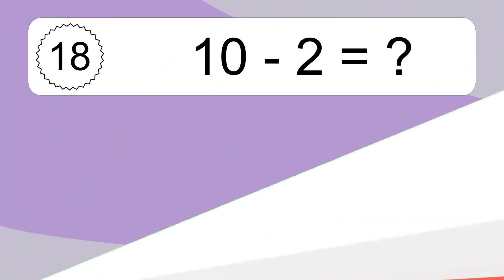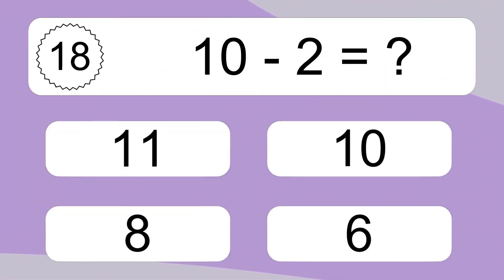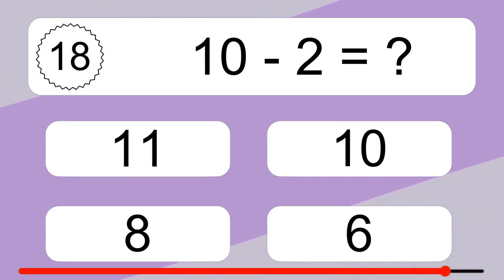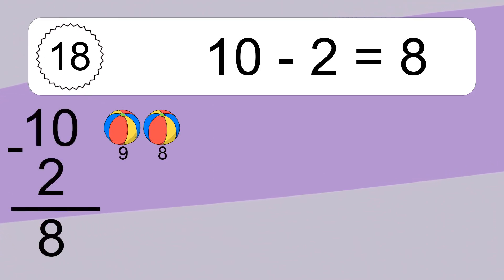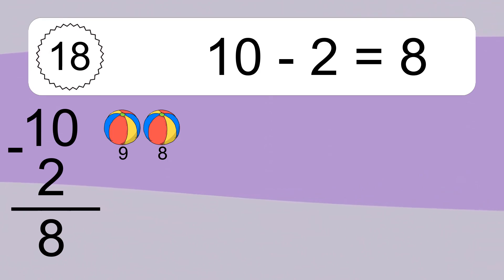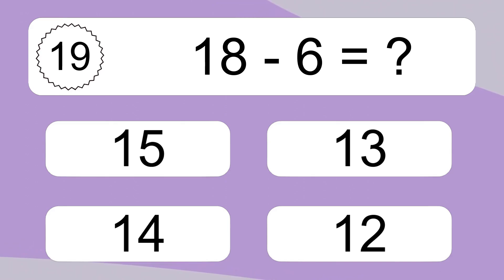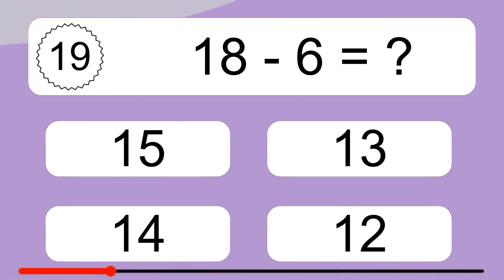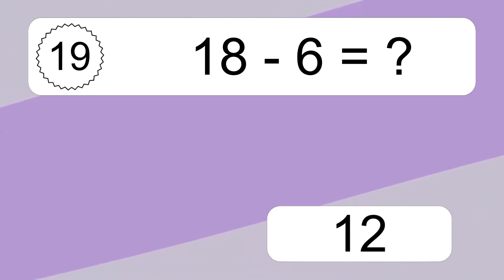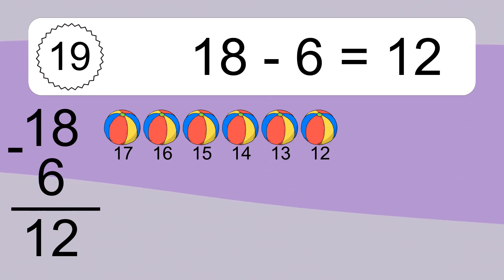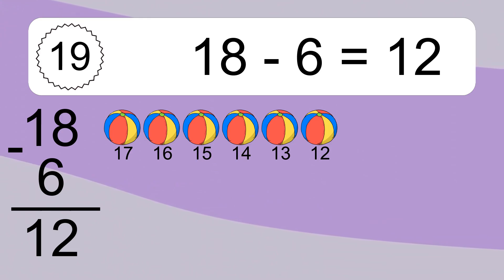10 minus 2 equals what? 10 minus 2 equals 8. Let's count it. 9, 8. 18 minus 6 equals what? 18 minus 6 equals 12. Let's count it. 17, 16, 15, 14, 13, 12.